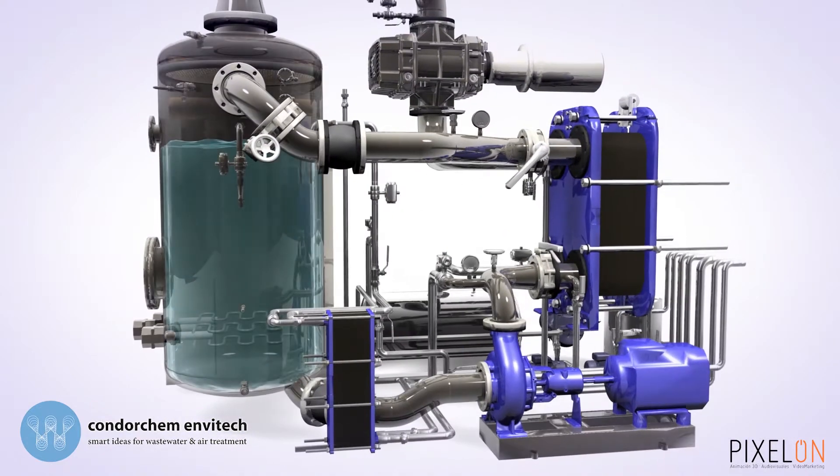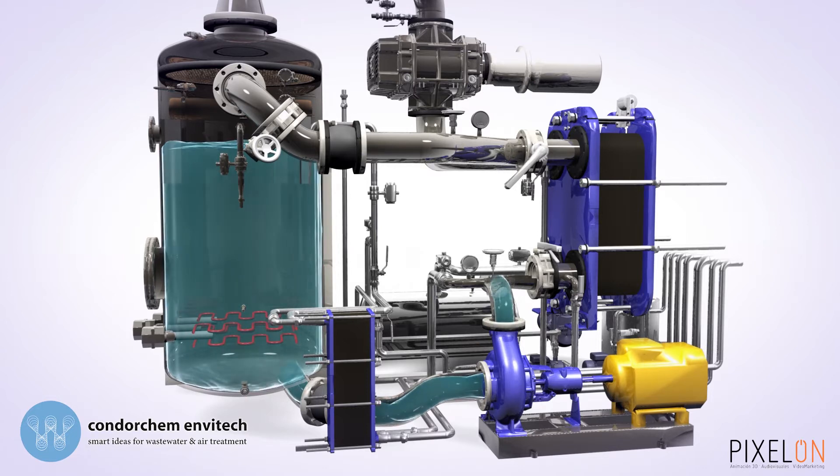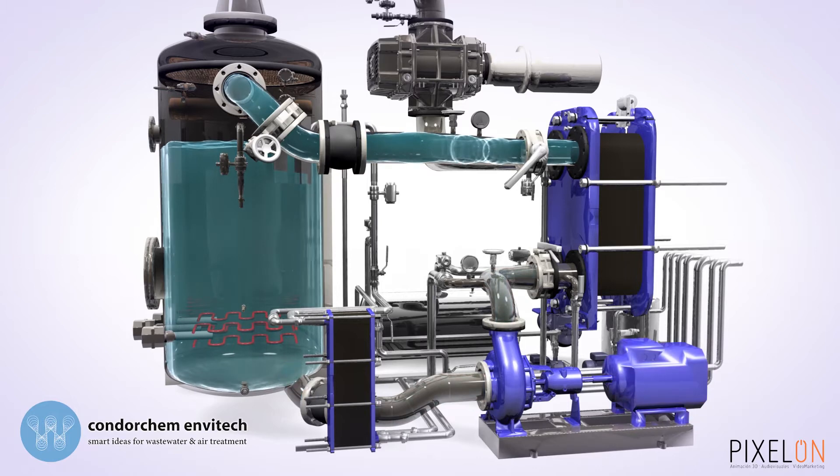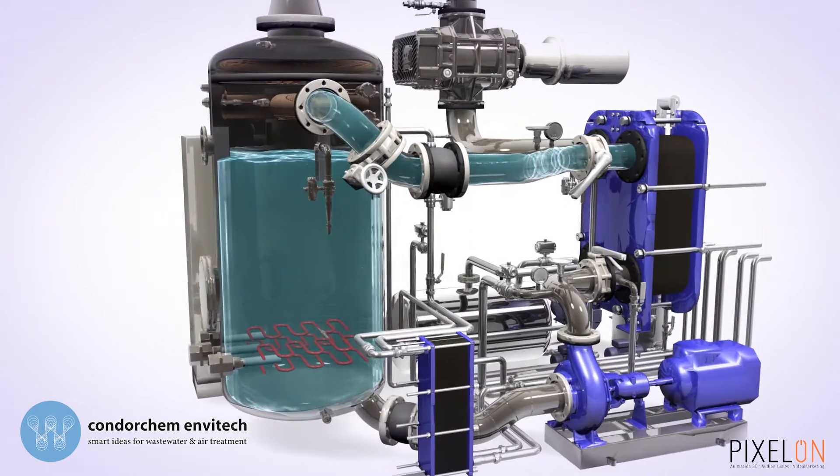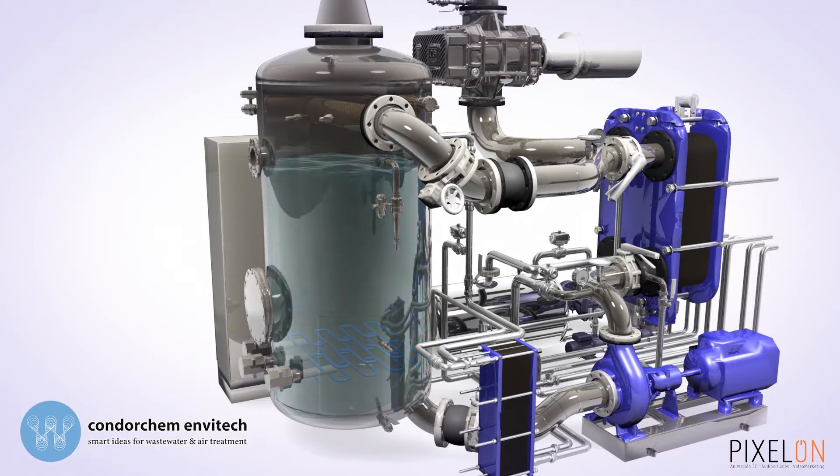the recirculation pump and the electrical resistors start working, to reach an operating temperature of 60 degrees Celsius. At this point, the resistors stop and the vacuum system reaches a value of 240 mbar in the evaporation boiler.